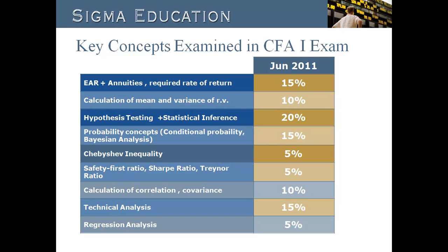In statistics, there are four topics that appear frequently in previous exams. CFA Institute has consistently tested candidates' ability to compute mean and variance of a given random variable. Questions can be set from the discrete distributions — binomial and normal — in the curriculum.